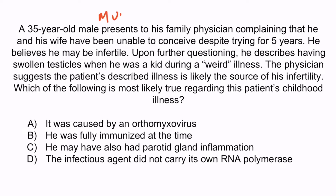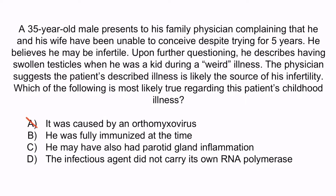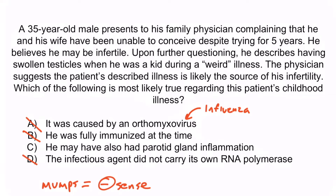Hopefully you noticed that this man had mumps as a kid. From the patient's history, we learn he had swollen testicles during that illness and is having fertility issues — both consistent with a mumps infection. The correct answer is C: he may have also had parotid gland inflammation. Remember the kid pulling on that cat's cheeks, like parotitis? A is wrong because orthomyxovirus refers to influenza, not mumps — mumps is a paramyxovirus. Remember that pair of mixing crayons? B is wrong because immunized children do not typically get mumps — mumps is covered with the MMR vaccine. And D is wrong because mumps is a negative sense virus, and negative sense viruses do carry their own RNA polymerase. Remember those dark negative rain clouds? And with that, you've learned all you need to know about mumps virus.